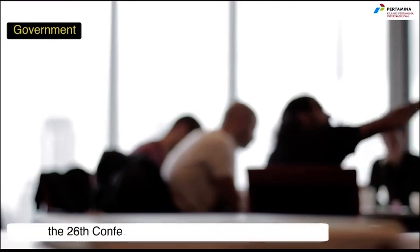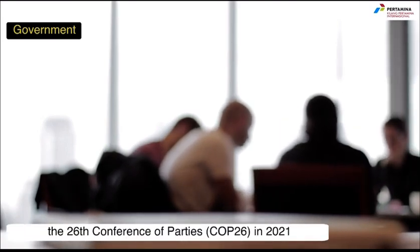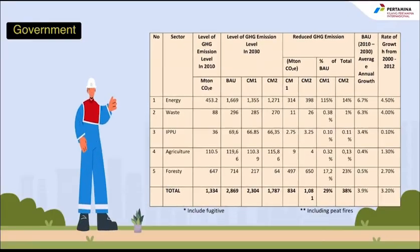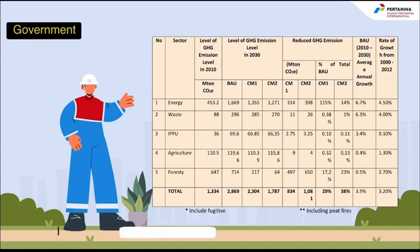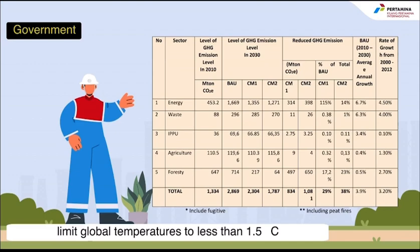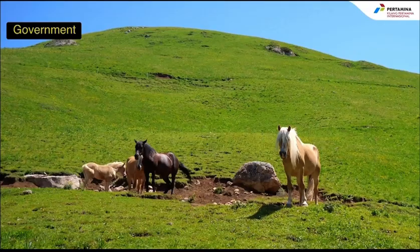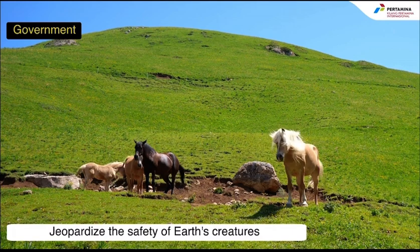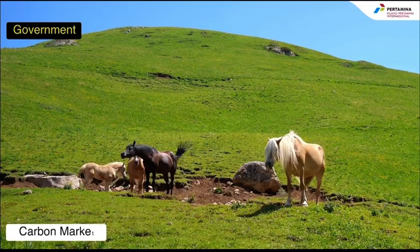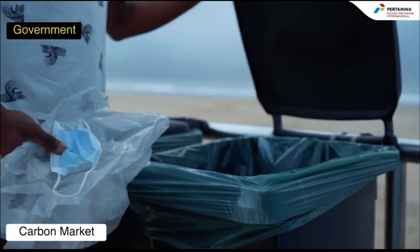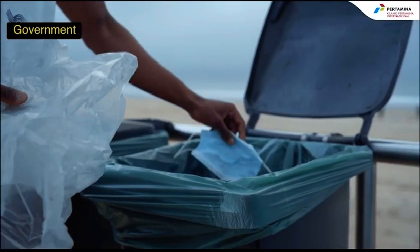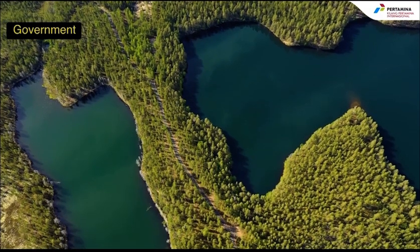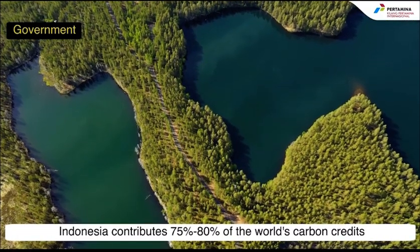As a government sector initiative, a key global issue discussed at the 26th Conference of Parties (COP26) in 2021 in Glasgow, Scotland, is Indonesia's commitment to reducing emissions by 29 percent by 2030. The agreement reached at COP26 aims to limit global temperature to less than 1.5 degrees Celsius in order to reduce greenhouse gas concentrations in the atmosphere. COP26 also discusses important decisions regarding carbon markets, with Indonesia having the potential to become a carbon producer, contributing 75 to 80 percent of the world's carbon credits.